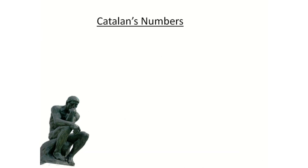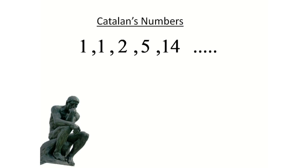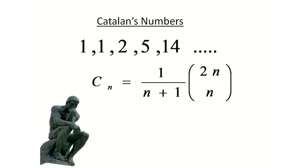So first, let's define what is a Catalan number. A Catalan number is a sequence of numbers like the Fibonacci series. For example, 1, 2, 5, 14 are Catalan numbers. There is also a general formula for the nth Catalan number, which is 1 upon (n+1) times (2n choose n).